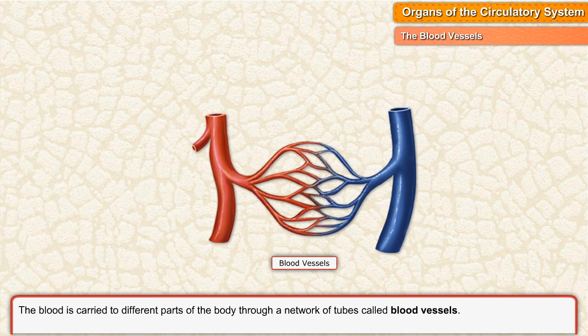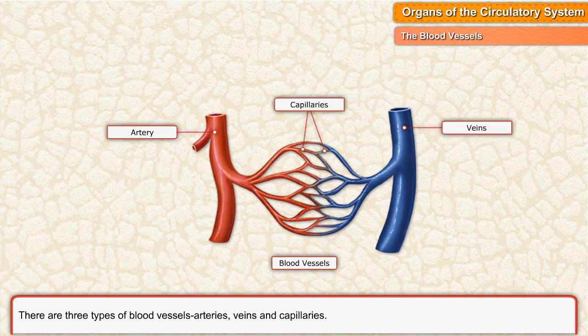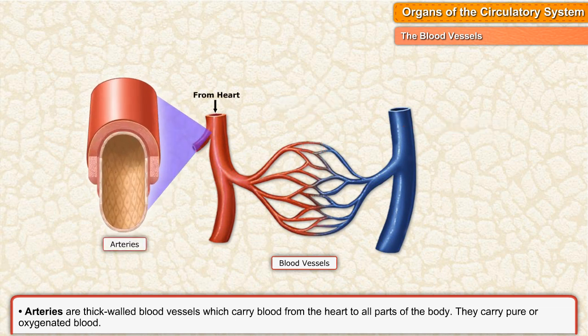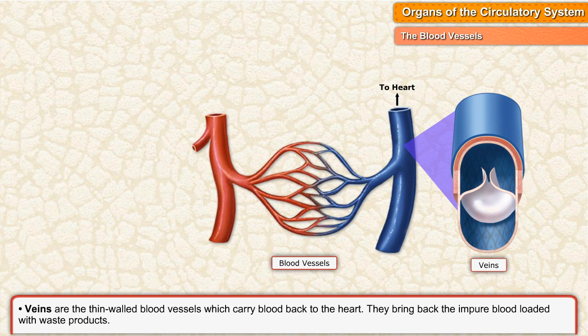Blood is carried to different parts of the body through a network of tubes called blood vessels. There are three types of blood vessels: arteries, veins, and capillaries. Arteries are thick-walled blood vessels which carry blood from the heart to all parts of the body. They carry pure or oxygenated blood.